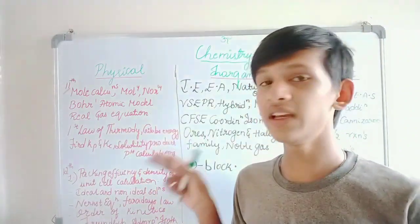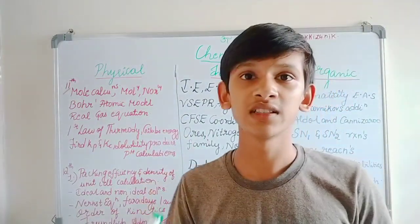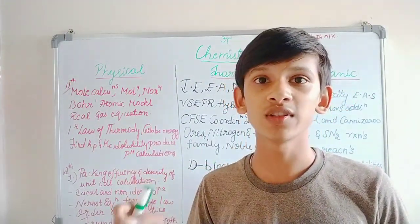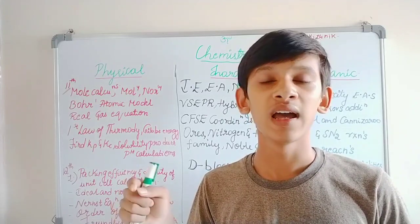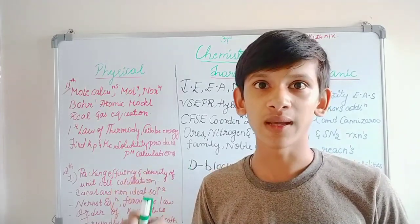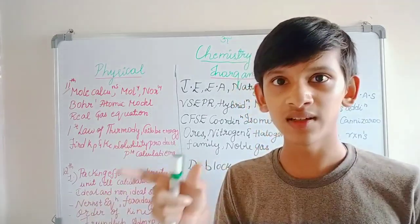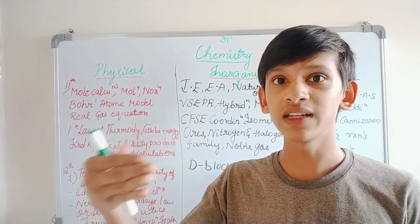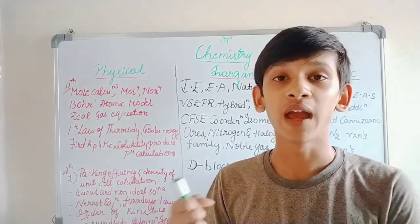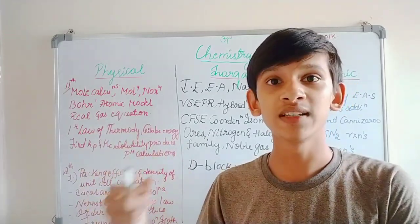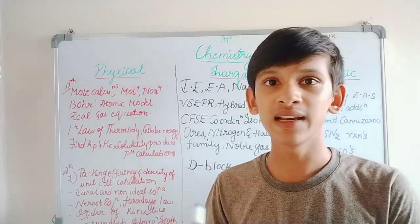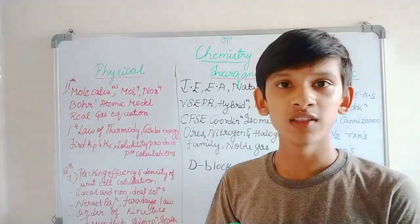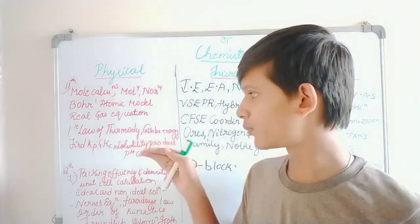Next is Gibbs free energy: ΔG = −2.303 RT log K. You will find the values and calculate Gibbs free energy. When measuring whether a process is spontaneous, Gibbs free energy is very important.